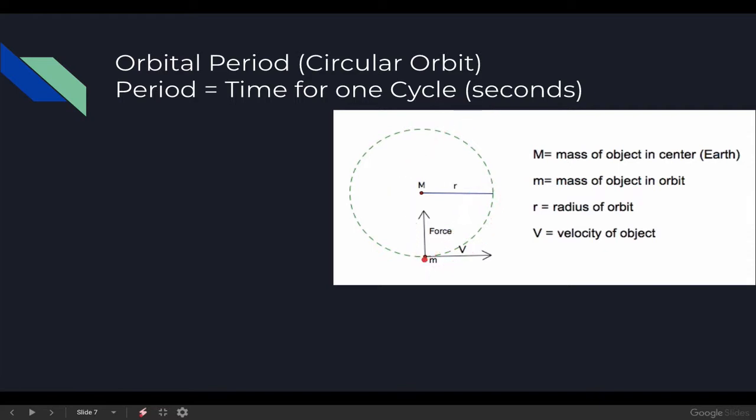But back to this example, we have this satellite of little m orbiting in a circle around big M. We know that velocity is distance divided by time. The distance that this little mass is going to travel in a single cycle or a single orbit is the circumference of this circle. Circumference of the circle, of course, you can find by taking 2 pi times the radius. The time is going to be the orbital period. The symbol for period is a capital T.